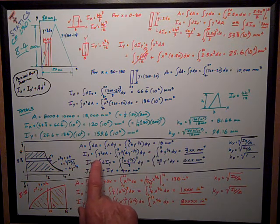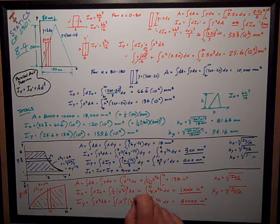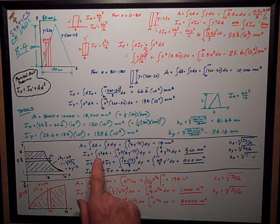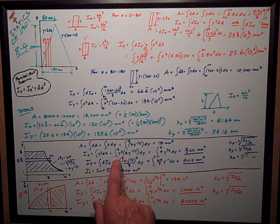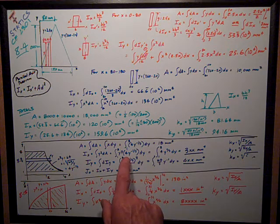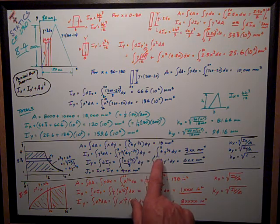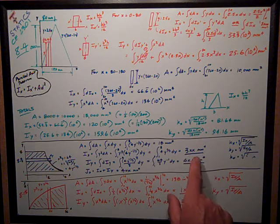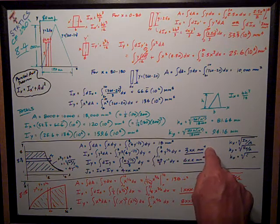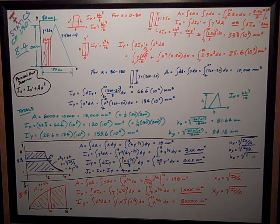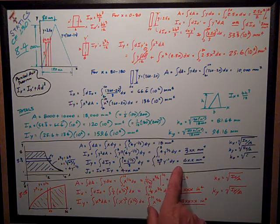Ix equals, in this case, the Ix-prime term goes to zero because the height dy goes to infinity, so I'm just left with the y² dA term. That's the integral from 1 to 8 of y² times x dy, substituting 4y^(−1/3) for x. Multiplying through, I get the integral of 4y^(5/3) dy, which equals some value in mm⁴. You can plug into Wolfram Alpha or evaluate it yourself — but remember, you won't have Wolfram Alpha on the test.